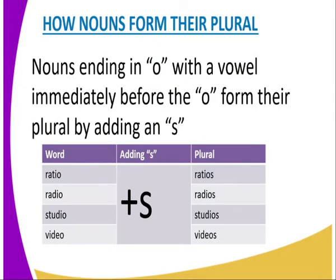We also have nouns ending in -O where the vowel immediately before the O forms their plural by adding an S. Examples of those words include ratio to ratios, radio to radios.